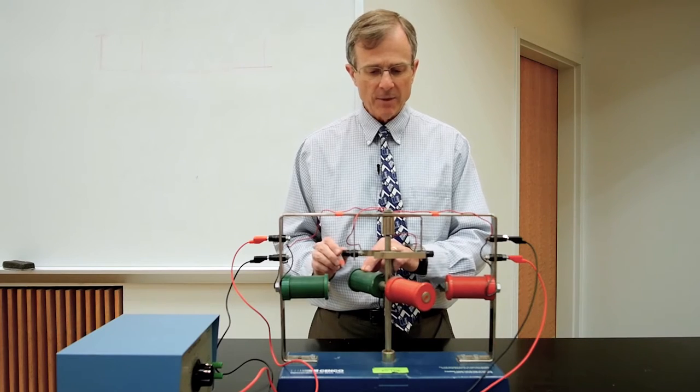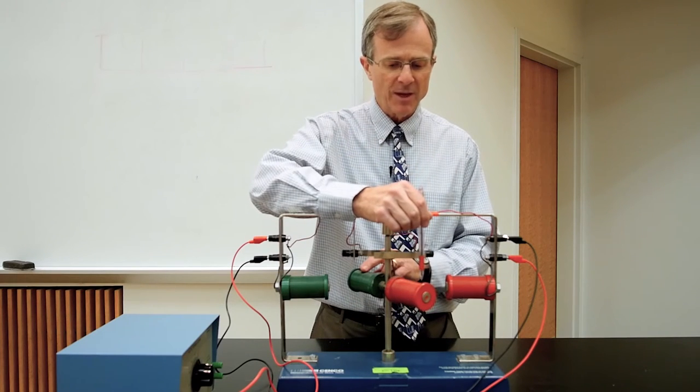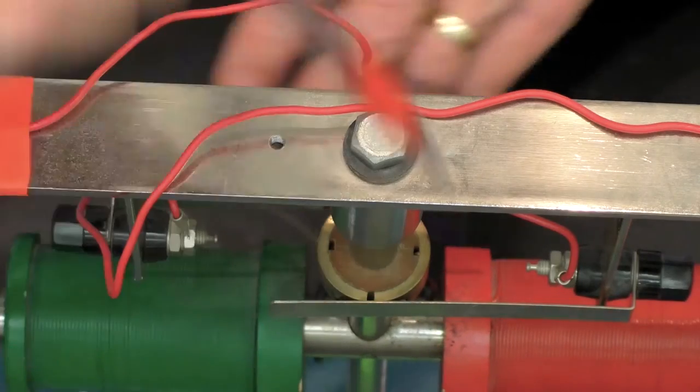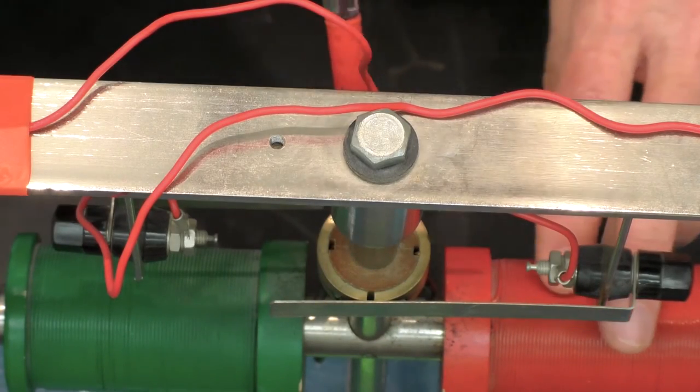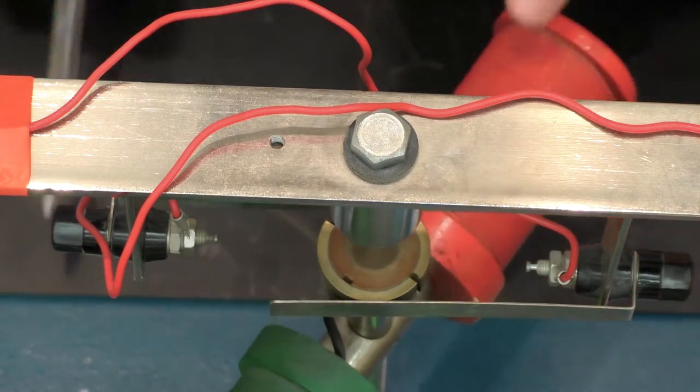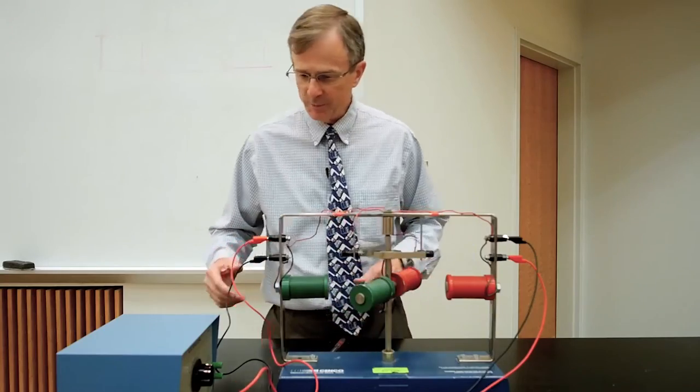Then comes back around here. Remember, this is now a south pole. It's attracting this north pole. Now then it passes through that gap in the commutator again and then repels again. So that's a basic motion. Let me show you how it works.